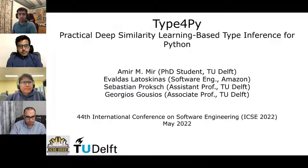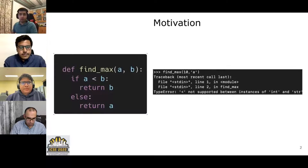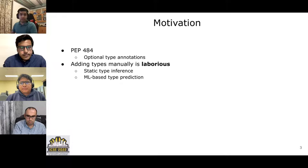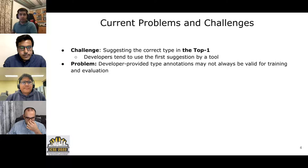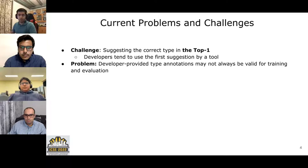Hi everyone, my name is Amir Mir. Today I'm going to present TypeForPy, our technical paper at ICSE 2022. Python is easy to use and allows rapid prototyping, but due to the lack of static types in Python, developers often encounter type errors. Python supports optional type annotations, meaning developers can add type annotations gradually to their code base, but this is a daunting task. Researchers have recently proposed ML-based type prediction models and static type inference tools. The main challenge is suggesting the correct type in the top-1 prediction, since ML models usually give a list and research shows developers tend to use the first suggestion.